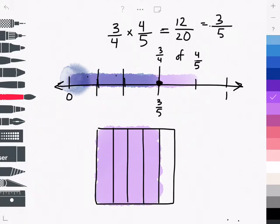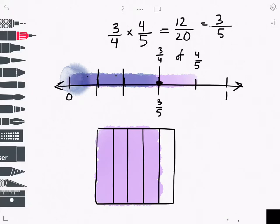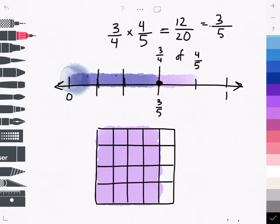Now I'm looking for 3/4 of 4/5, so I'll split my rectangle now into fourths and I'm going to highlight 3/4.